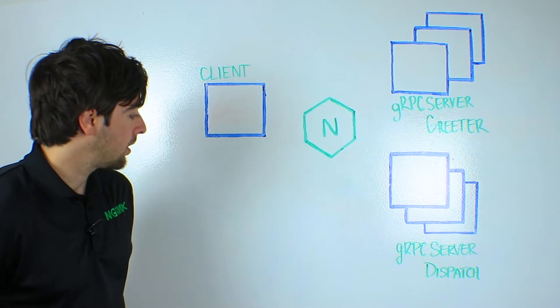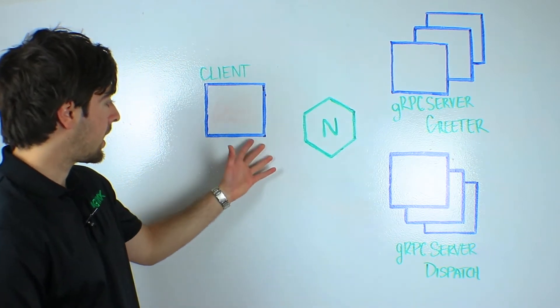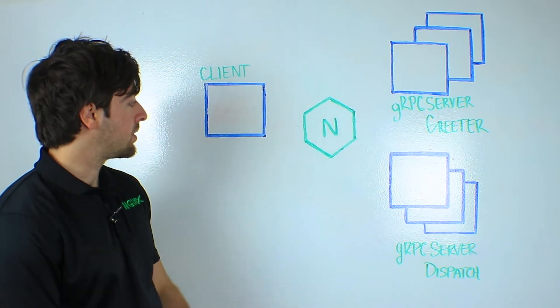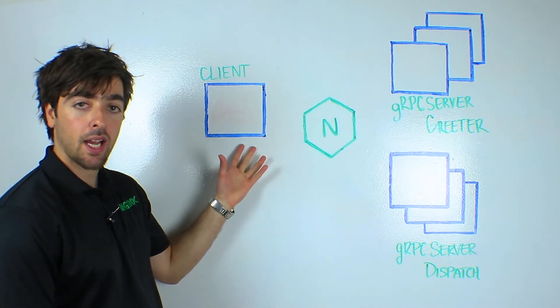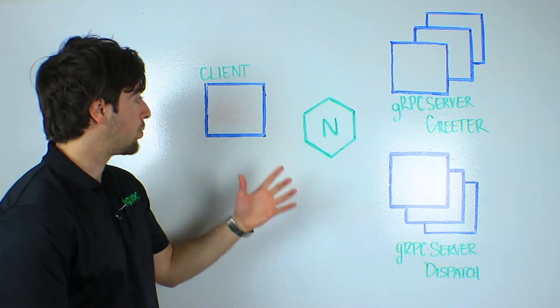So let's take a look at this whiteboard here. So over here we have a client service, and we would define our protocol buffers in this client and use gRPC to compile those protocol buffers and create a client stub.